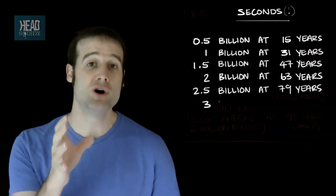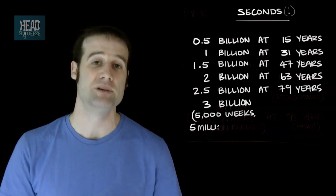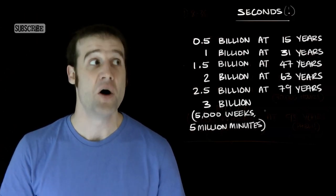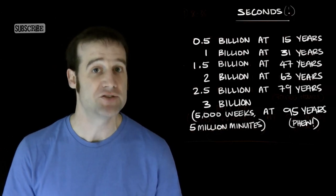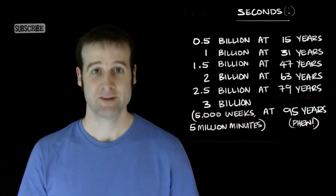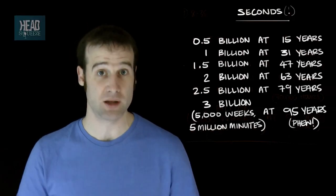And finally, 95. Not only do you get 3 billion seconds, you also get 5,000 weeks and 5 million minutes all in the same year. What a year. Not since you were 57 have you had that much fun in the same year. Okay. So those are all the nice round numbered intervals you could celebrate for your birthdays.